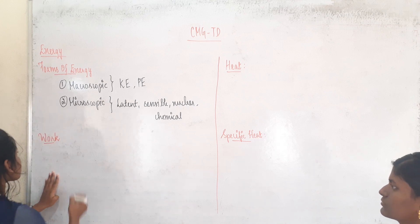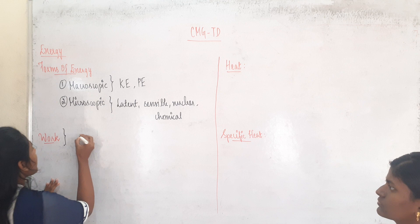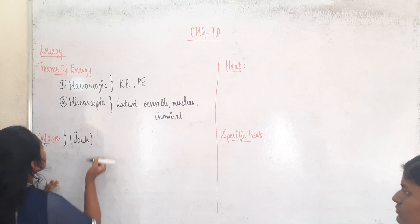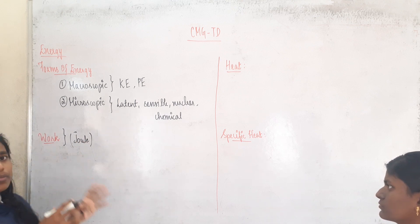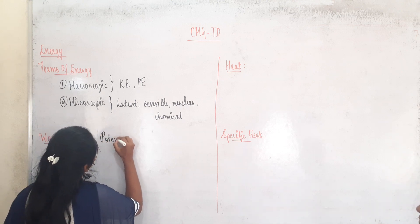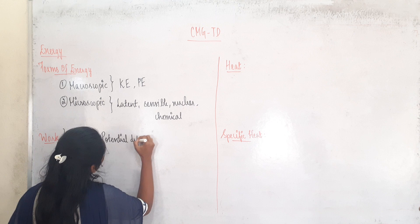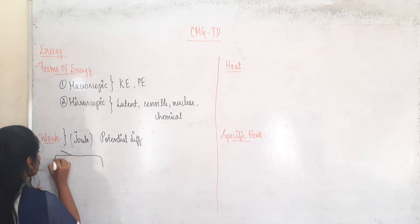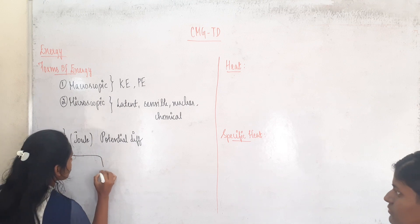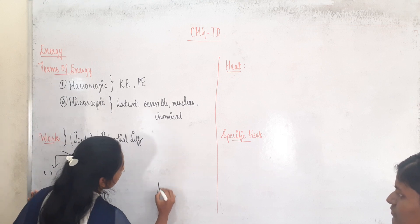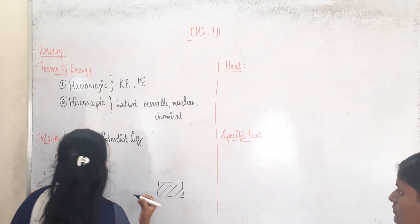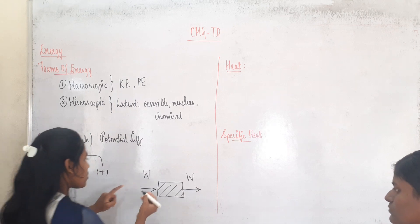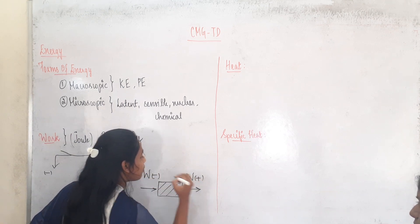Now we will be going on into work. Work is also an energy, so the SI unit is joule for it. The energy obtained from potential difference is called work and the SI unit is joule. Work is divided into two types: negative and positive work. When we consider a system, work is done on the system and work is done by the system. Work done on the system is negative and work done by the system is positive.